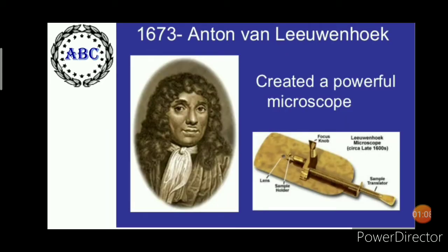In 1673, Anton van Leeuwenhoek is another scientist who saw these cells soon after Hooke did. He made use of a microscope containing improved lenses and found motile objects.